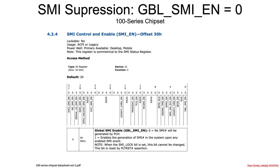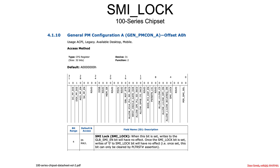On the 100 series chipset, it is more or less the same. There is still a global SMI enable bit — zero means no SMIs whatsoever, one means SMIs are allowed — and it is still locked by the SMI lock bit. The SMI lock bit is in a slightly different location: device 31, function two instead of function zero, but still at offset A0 and behaves the same way. Once set, writes to the global SMI enable bit have no effect.